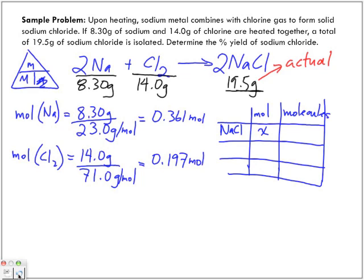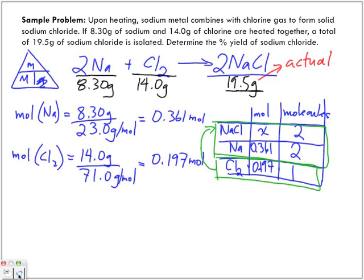We have moles to molecules. We have how many moles of sodium? 0.361. How many moles of chlorine? We have 0.197. How many moles of sodium chloride do we have? Two. How many of sodium? Two. And chlorine? One. So, what we want to do now is we need to figure out how many moles of sodium chloride we can produce. We've got to compare the chlorine with the sodium chloride. Why?